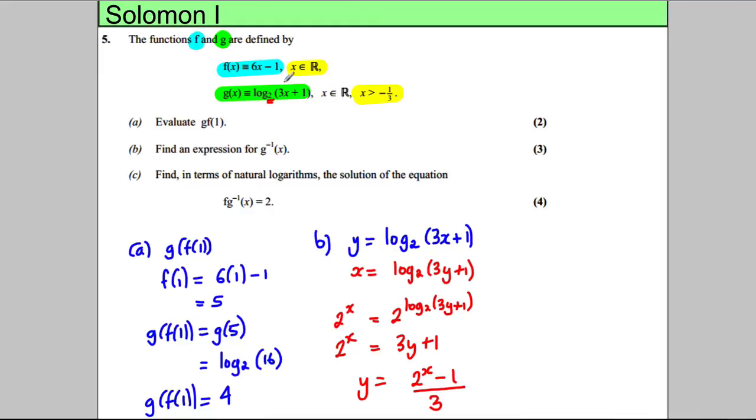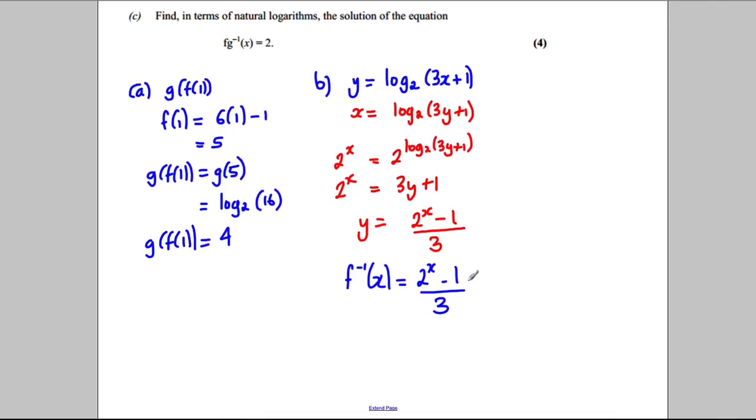Looking back up here, we did this for function g where x had to be bigger than or equal to negative one-third. When that was true, we had that log can take any number, so here x can take any number. We just state that x can be any real number.